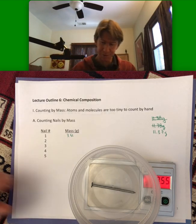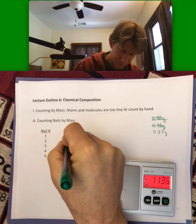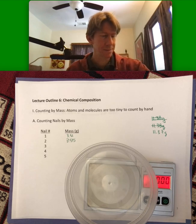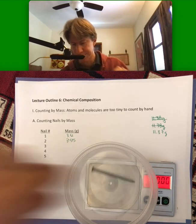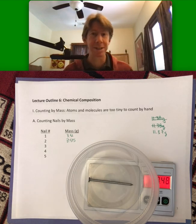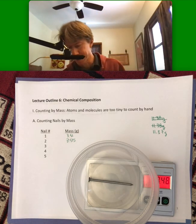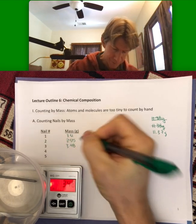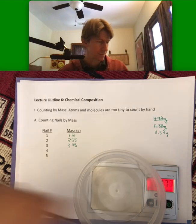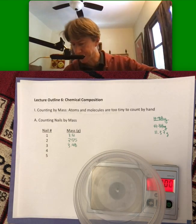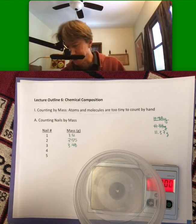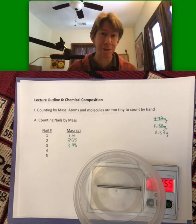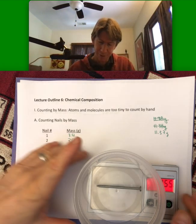Nail number two is three point five five grams. I'm going to try and weigh them in the same way, in the same place in my little weigh boat. Nail number three: three point four eight. I'm going to do five just to get a good average — we like good statistics. We always need to weigh at least three to get a standard deviation. Nail four: three point five five.